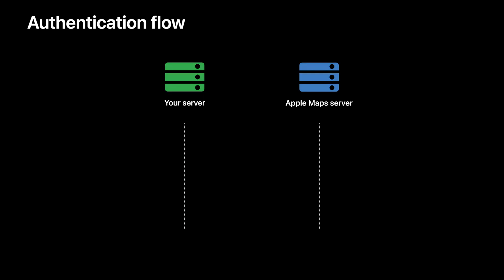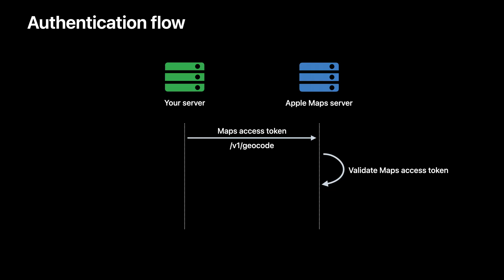Let's take a quick look at how the API interaction with the Maps access token works. We'll pass the Maps access token along with the server API call — it is added as a header to the API call. The Apple Maps server will validate the Maps access token, and once validation is successful, it will respond with an API response.